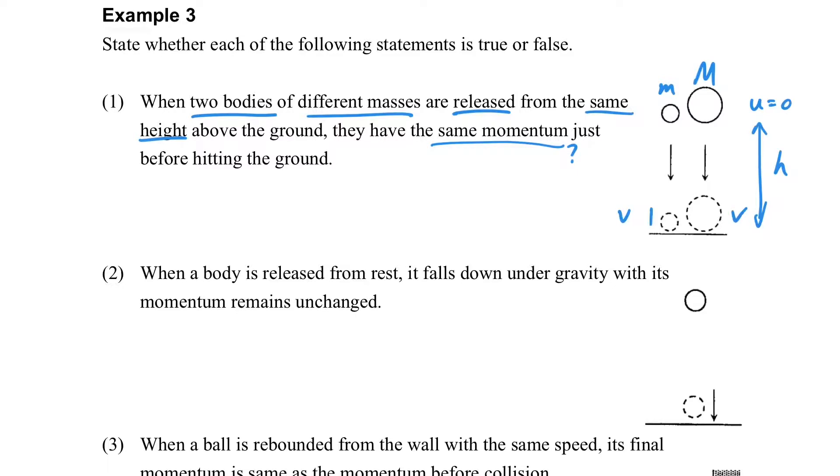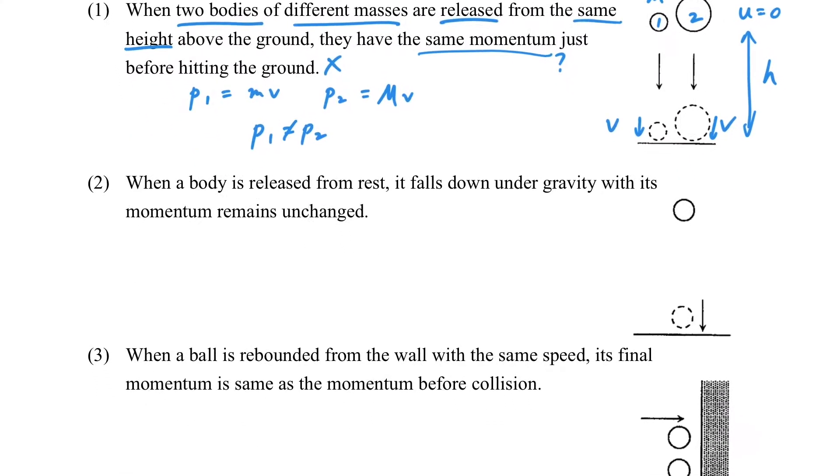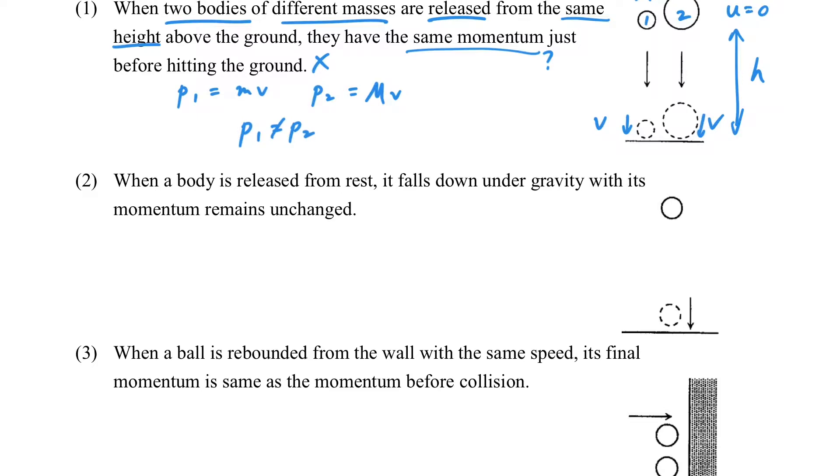How to find the V when they hit the ground? We can measure the V by using the idea of change in energy. Because they have the same V but different mass, so the momentum is different.